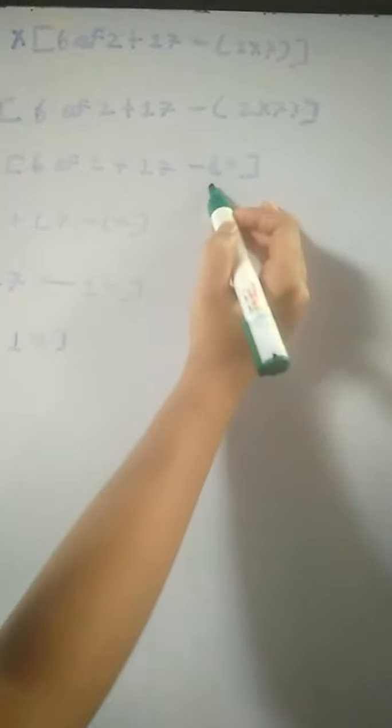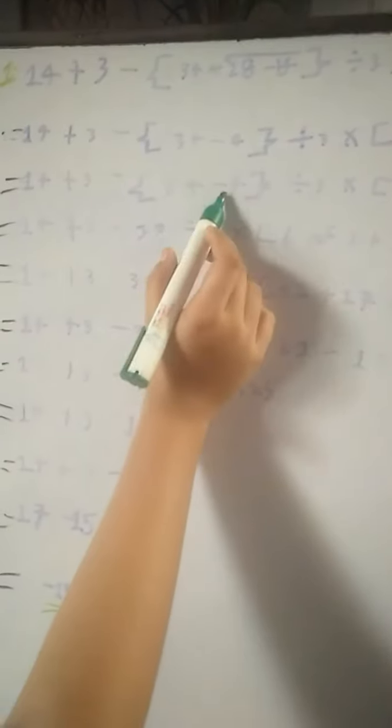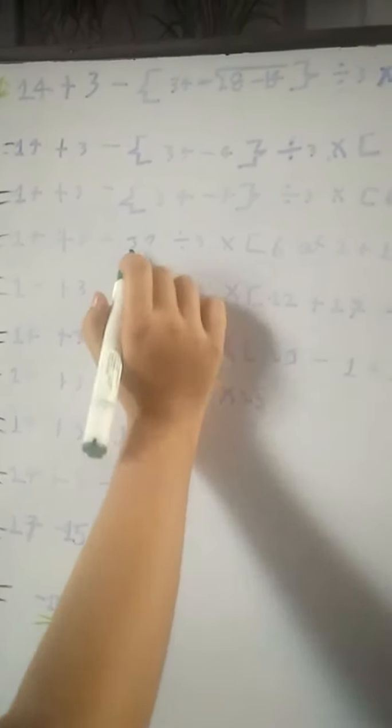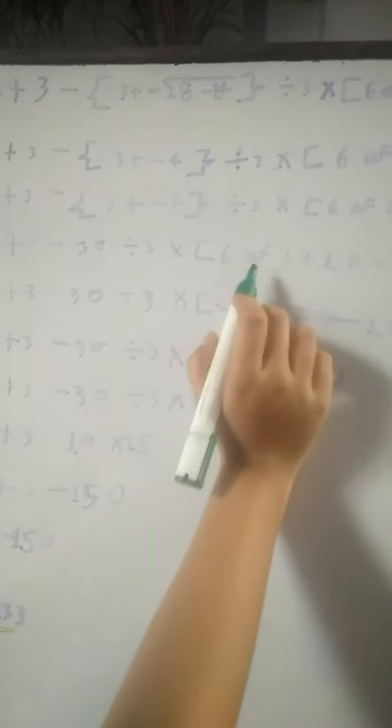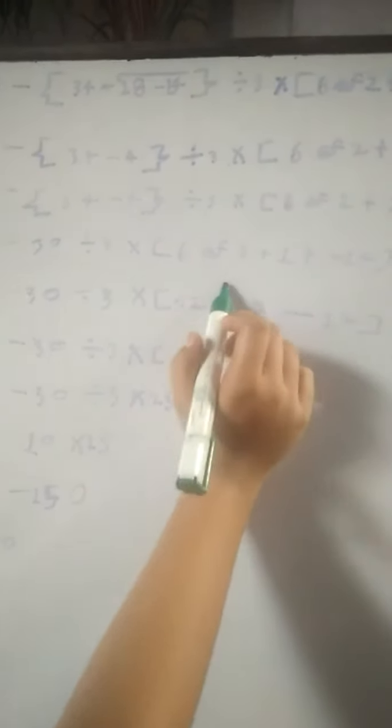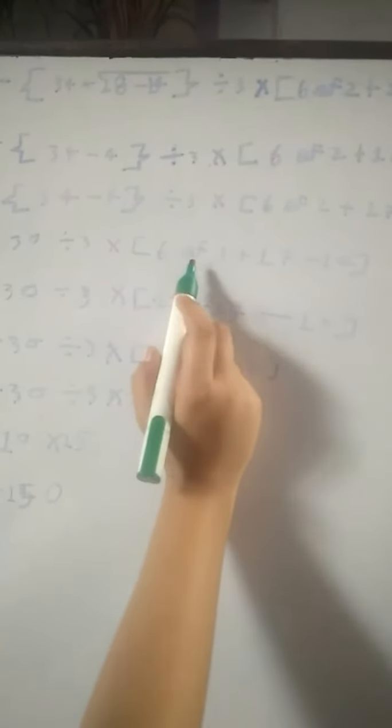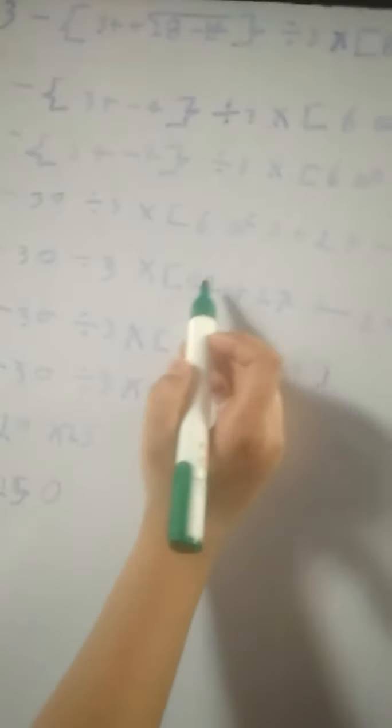Now we go to the next step. This is a big bracket and this is a small bracket. If we solve the small bracket, our answer is 14. Now we have to solve the curly bracket, and our answer is 12.